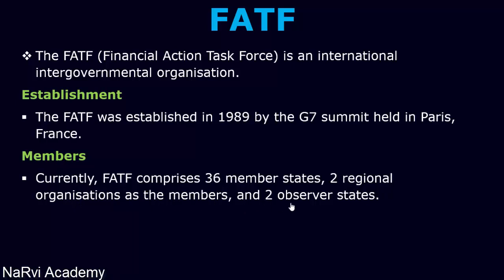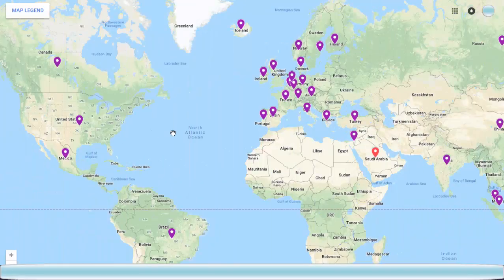Currently, FATF comprises 36 member states, two regional organizations as permanent members, and two observer states. The two regional organizations are the Gulf Cooperation Council (GCC) and the European Commission, and the two observer states are Indonesia and Saudi Arabia.